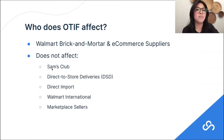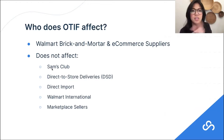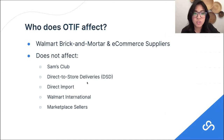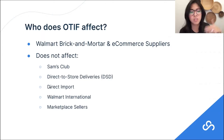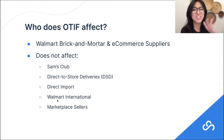As of today, Walmart's OTIF program does not currently impact Sam's Club suppliers. Sam's Club has its own version of supply chain compliance but doesn't fall under the OTIF 98% rule. If you are a direct-to-store delivery (DSD) supplier, OTIF does not currently impact you. Direct import suppliers — meaning Walmart takes possession of your goods at the port in your country of origin, such as China, India, or Vietnam — are not liable for the OTIF program because Walmart is taking ownership so far upstream in the supply chain. Walmart international — Canada and Mexico — have their own versions of OTIF, not falling under the program we're talking about today. And for marketplace sellers, if you're a third-party seller on walmart.com, you are not currently affected by OTIF.